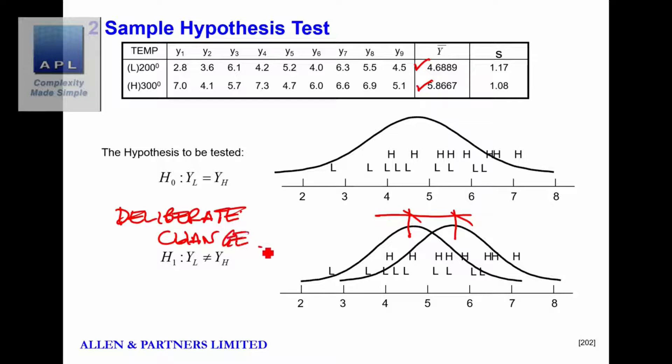And of course here, what have we done? We've made a deliberate process change. And then the t-test is going to tell us whether the difference that we see is signal or just noise.